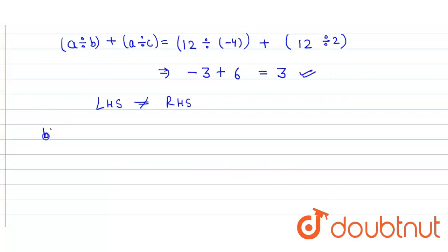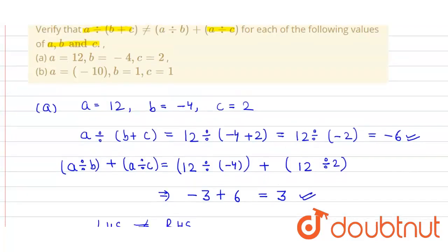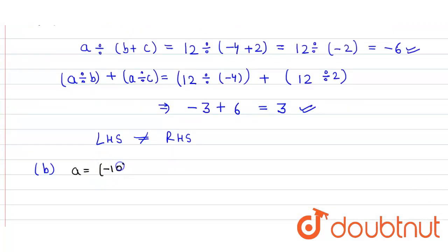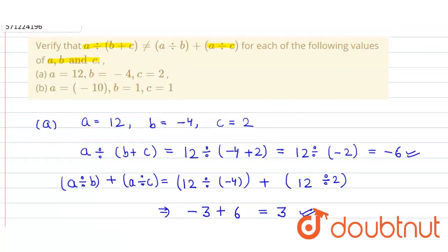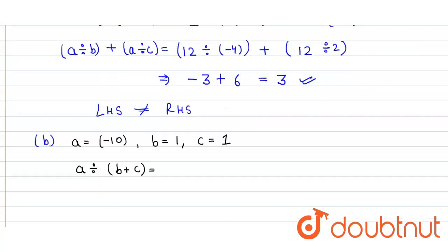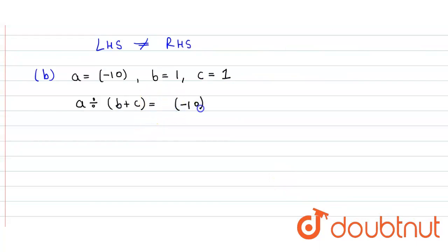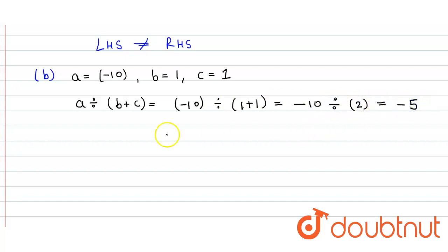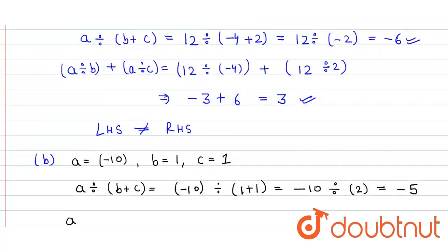Similarly, in the second part, we again verify the expression. Here the value of a is minus 10, b is equal to 1, and c is equal to 1. We find out a divided by (b plus c), which is minus 10 divided by (1 plus 1), equal to minus 10 divided by 2, so we get minus 5.